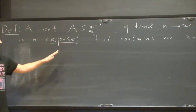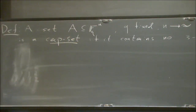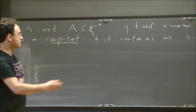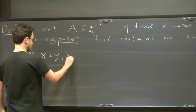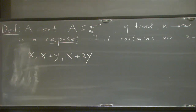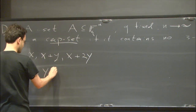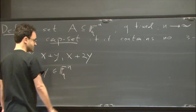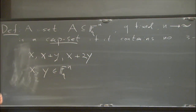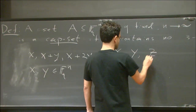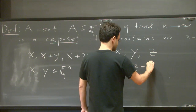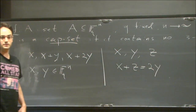From now on, we're just going to talk about three-term progressions. Once you go to F_q, this analogy changes. A three-term arithmetic progression is x, x+y, x+2y, where x and y are in F_q^n. Another way to define a three-term progression is a tuple x, y, z such that x + z = 2y. That's equivalent, and you can define this in any abelian group where the characteristic is not 2 — so 2 does not divide q.